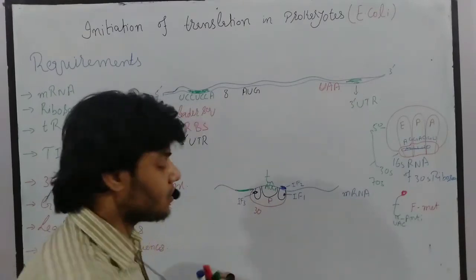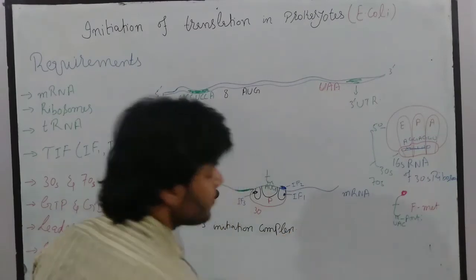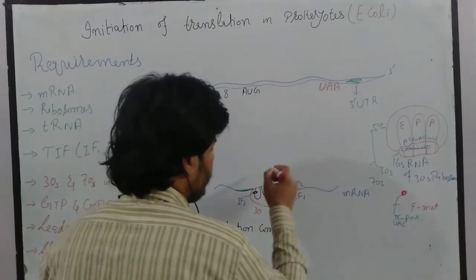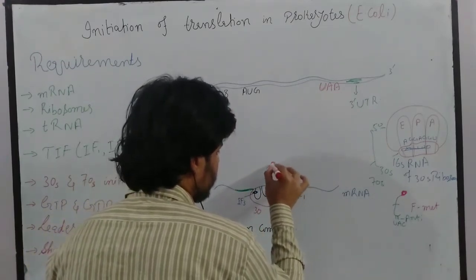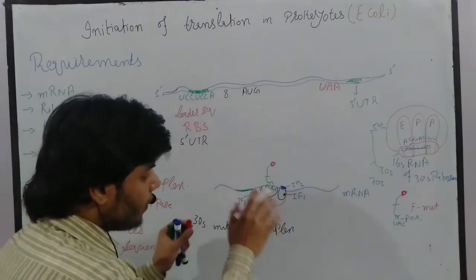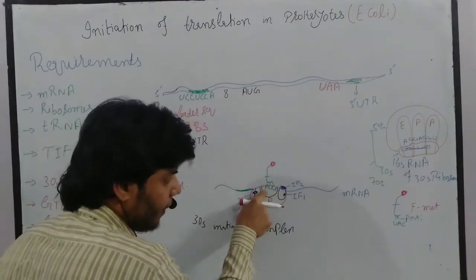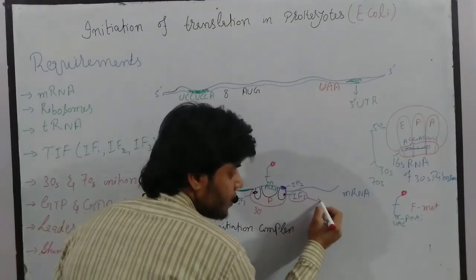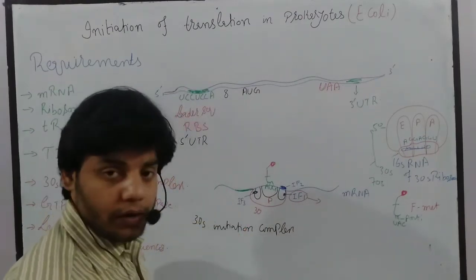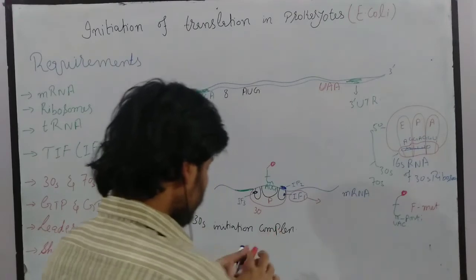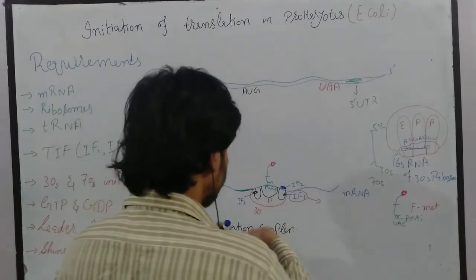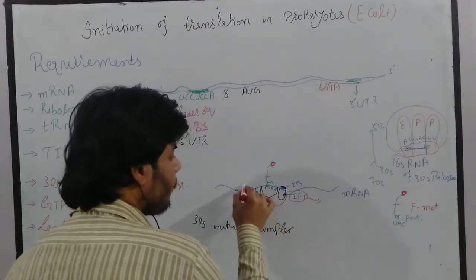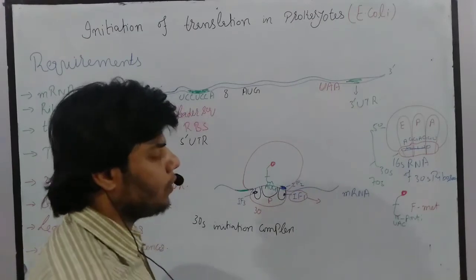Once the amino acid binds to that specific area, we call this the 30S initiation complex. When the transfer RNA carrying the amino acid is bound at the P site, the initiation factor IF1 is released. After some time, the large subunit — the 50S ribosome — also binds here, and this condition is called the 30S initiation complex.